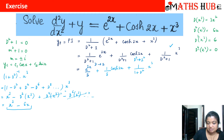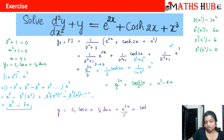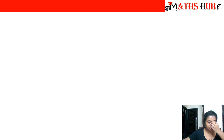The particular integral is e^(2x)/5 + cosh(2x)/5 + x³ − 6x. The general solution is y = c₁cos(x) + c₂sin(x) + e^(2x)/5 + cosh(2x)/5 + x³ − 6x. Let us now apply the same rule in a second example to consolidate understanding.